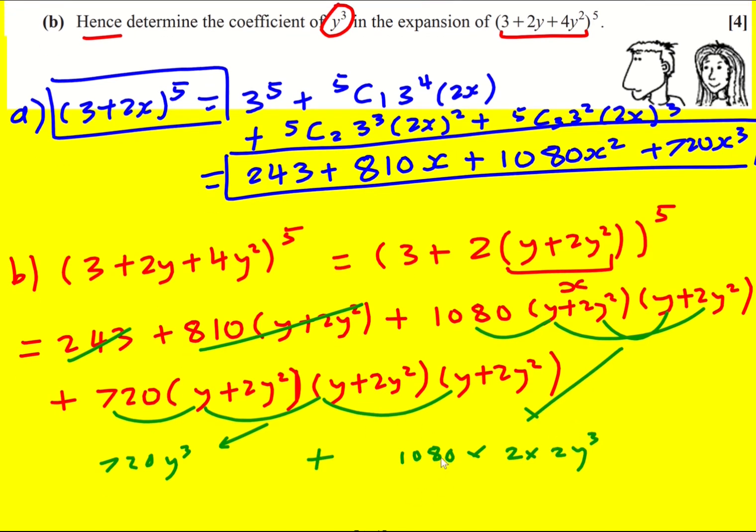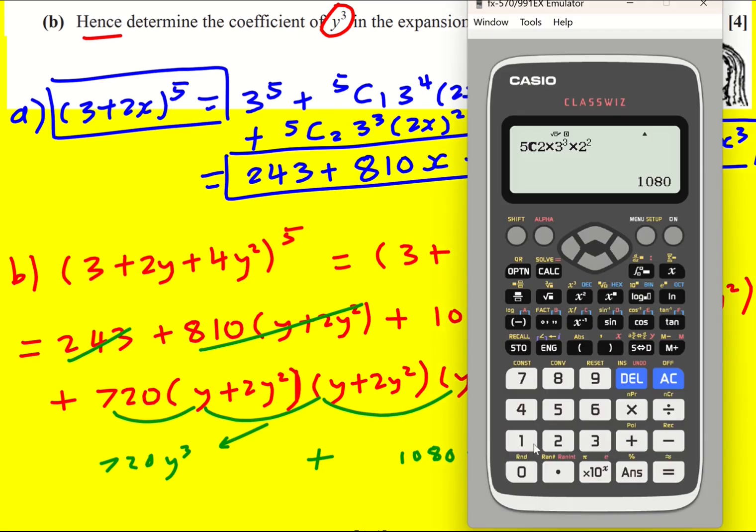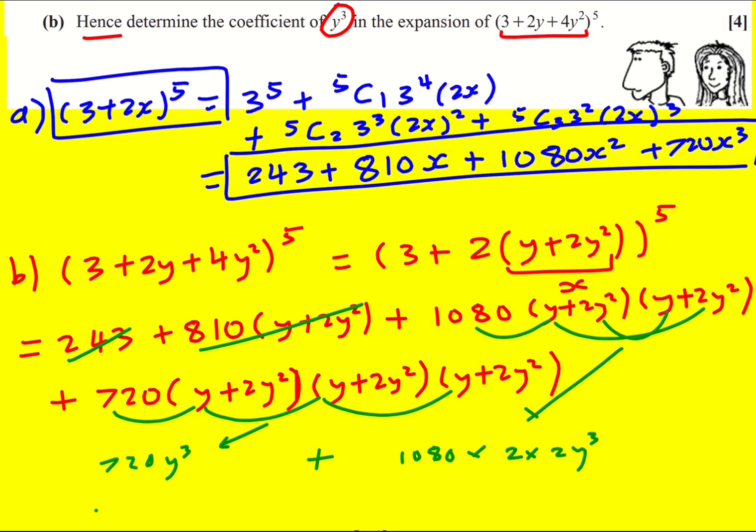I need the coefficient, so I just multiply through. I've got 1080 times 4 plus 720, which gives a coefficient of 5040. Not too bad - just be careful when putting these into your calculator, especially for part b.